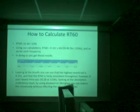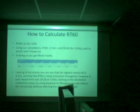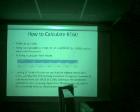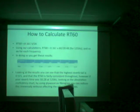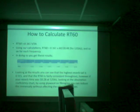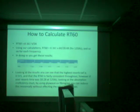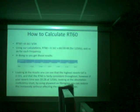RT60 equals 0.161 times volume over absorption. Using our calculations, RT60 equals 0.161 times 60 over 20.48 for 125 Hz, and so on for each frequency. Looking at these results, the highest reverb tail is 0.515, and the RT60 is fairly consistent throughout. If the reverb at a particular frequency were large, for example at lower frequencies, by using plywood on fiberglass you can reduce this significantly without affecting the other frequencies.